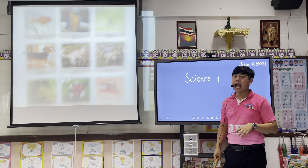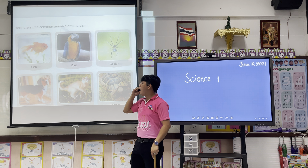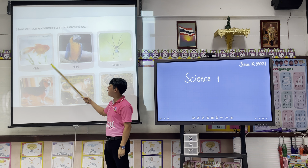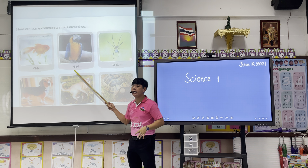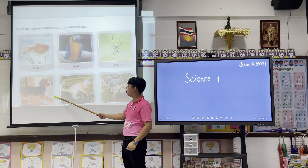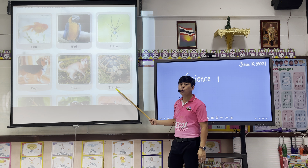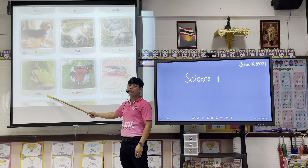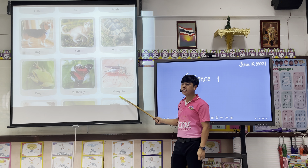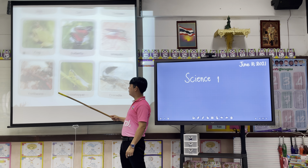These are the common animals around us. Number one: fish. Next: bird. Next: spider. Next: dog. Next: cat. Tortoise. Frog. Butterfly. Mosquito. Earthworm. Grasshopper. These are the common animals.